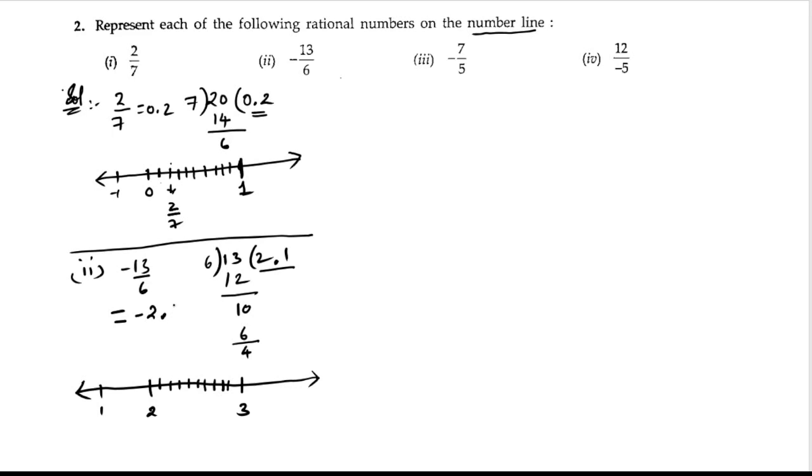We have to find minus 2.1. Let us erase this. Let us draw a number line again. Let us take 0 here, 1 here, and after 1, we are having minus 1, and in between, after minus 1, minus 2 and minus 3. After minus 2...